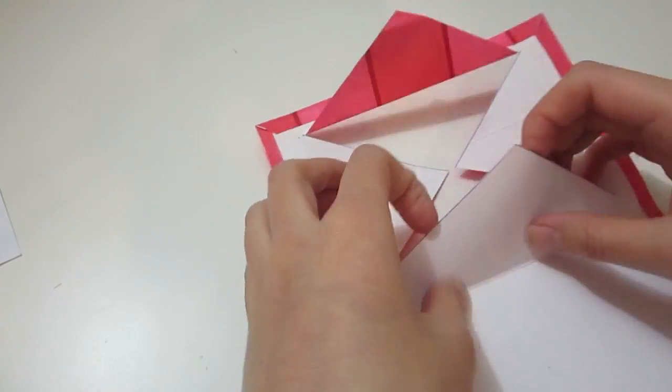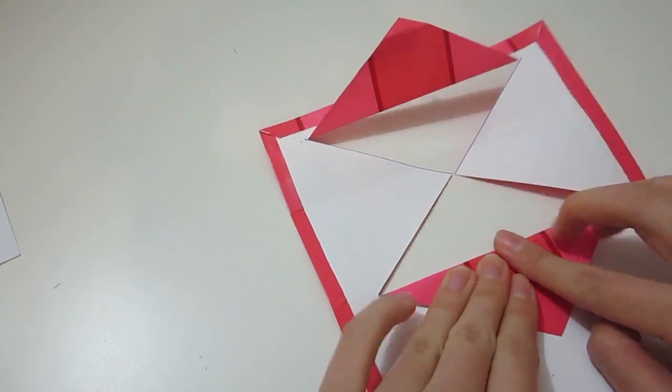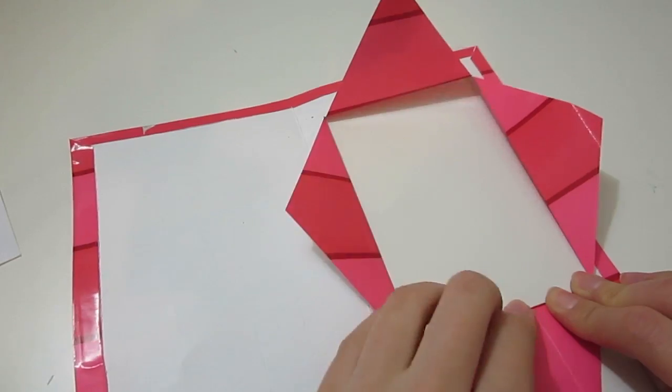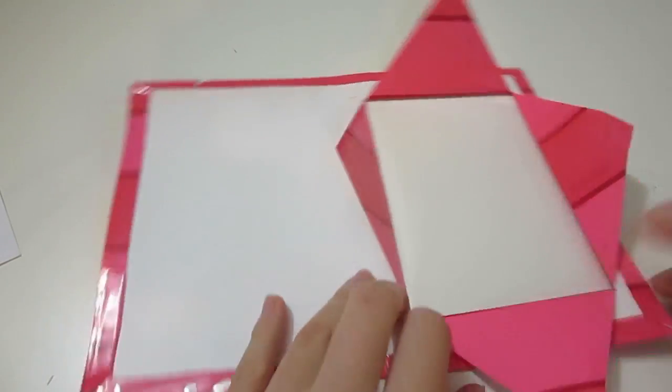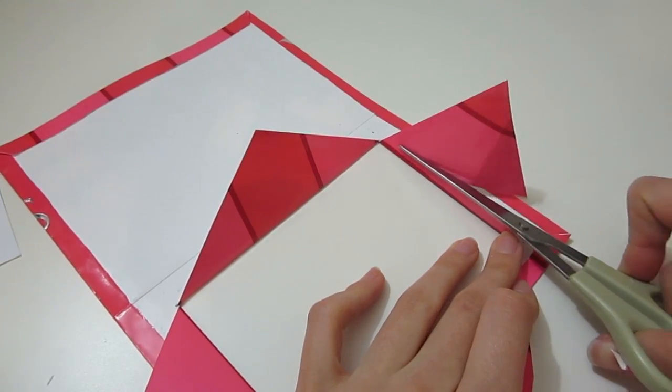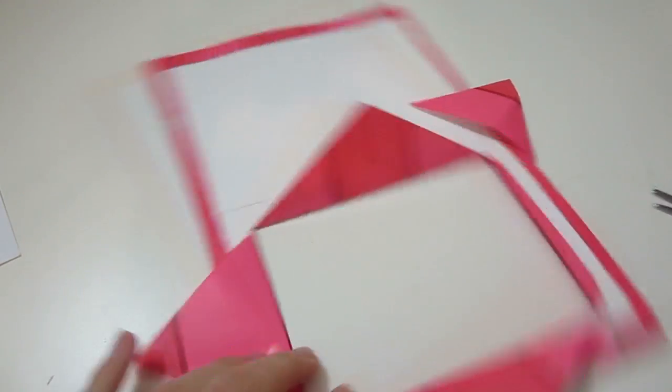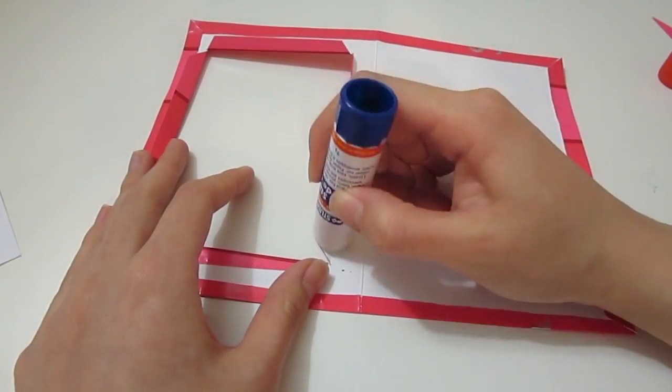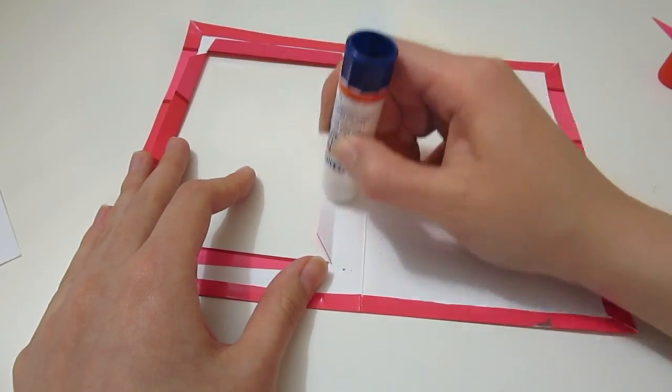Fold the triangles outwards and when you cut off the excess material, leave a bit of flap and glue the flap down to get a more polished edge.